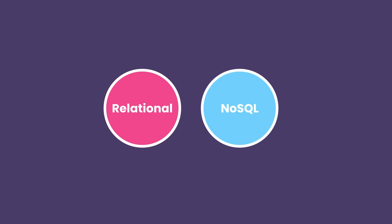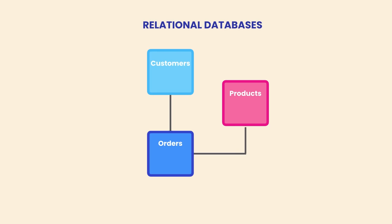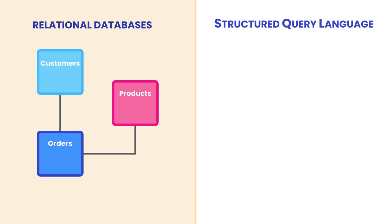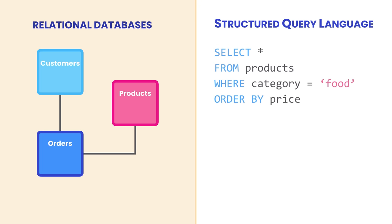Relational and non-relational, also called NoSQL. In relational databases we store data in tables that are linked to each other using relationships — that's why we call these relational databases. Each table stores data about a specific type of object, like customer, product, order, and so on. SQL is the language that we use to work with these relational database management systems. We use SQL to query or modify our data. In this course you're going to learn everything about this powerful language.